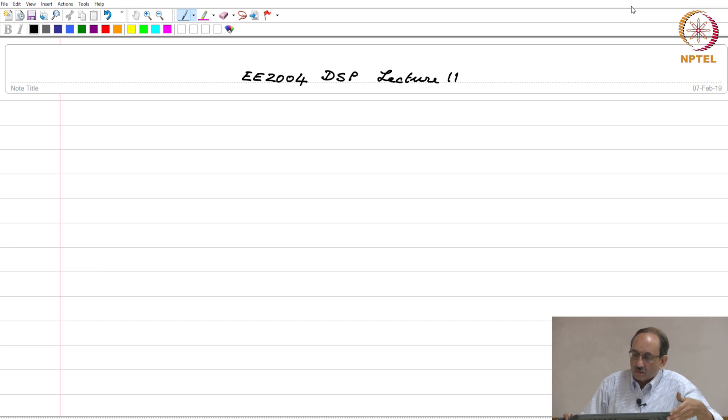We saw some examples of systems having poles and zeros and we also introduced the concept of poles or zeros at infinity.